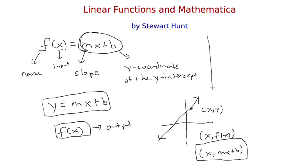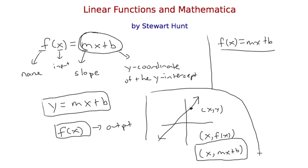When I write it in the form f of x equals mx plus b, this is function notation — the algebraic form. The points on the graph look like x comma f of x, which is mx plus b in this case. These are generic points on the graph. A function of the form mx plus b is a line because of the formula y equals mx plus b — that's the equation of a non-vertical line. All non-vertical lines can be put into this form, so all non-vertical lines are functions. We're going to deal with the function form rather than the equation of a line.